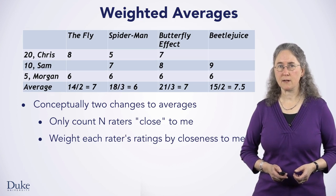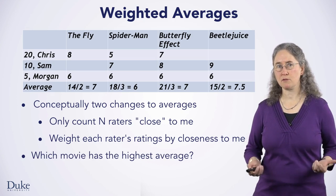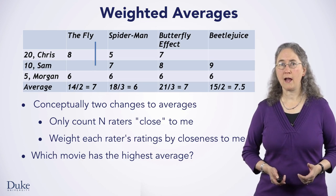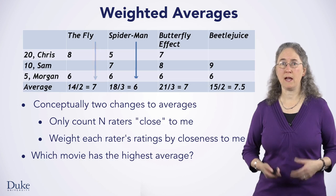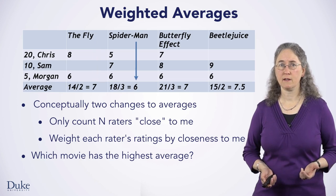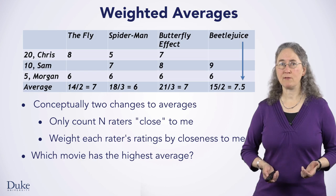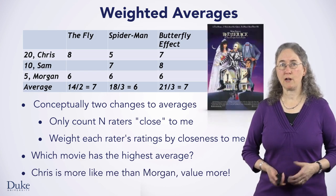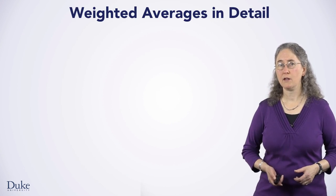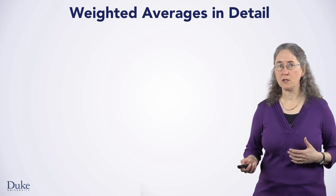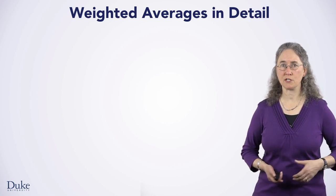Let's look at this idea in more detail. Which of these movies has the highest average, and is thus the most recommended movie for me? The Fly has an average rating of 7, Spider-Man has an average rating of 6, The Butterfly Effect has an average rating of 7, and Beetlejuice has an average rating of 7.5. Given these averages, I should watch Beetlejuice — it has the highest average rating. But Chris might be more like me than Morgan, so I should value Chris's ratings more. This will change how we calculate averages to get recommendations.